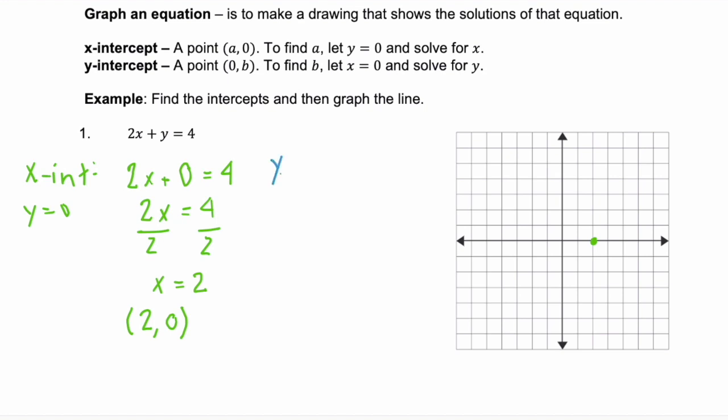Then we can find our y-intercept. And our y-intercept is when x equals zero. So we're going to solve two times zero plus y equals four. Well, two times zero is zero. So we're left with y equals four.